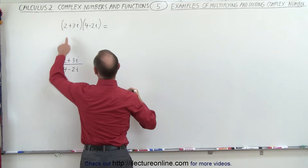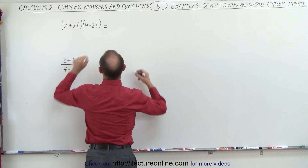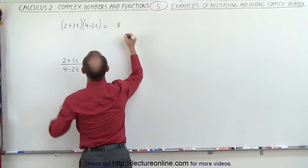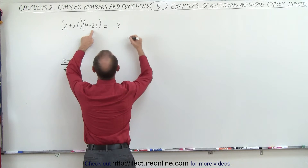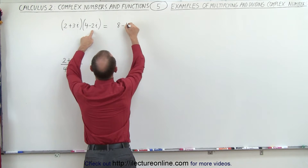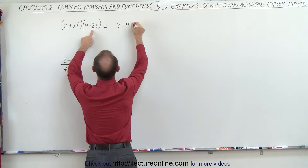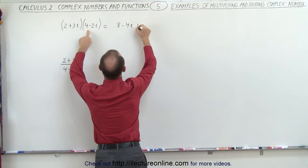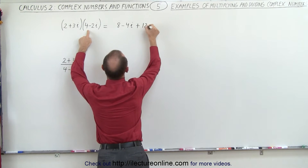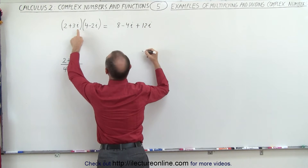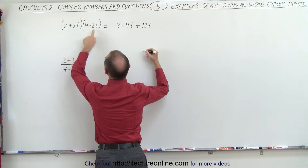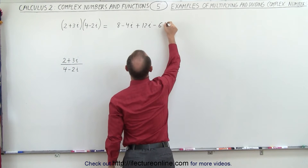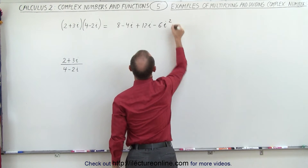And so this becomes as follows: 2 times 4, that's 8. 2 times negative 2i, that's negative 4i. 3i times 4, that would be plus 12i. And 3i times negative 2i, that gives us negative 6i squared.